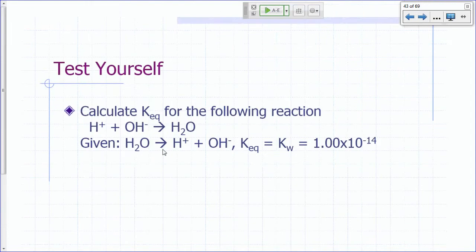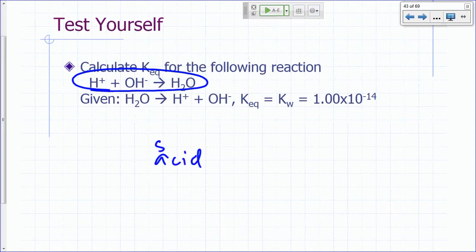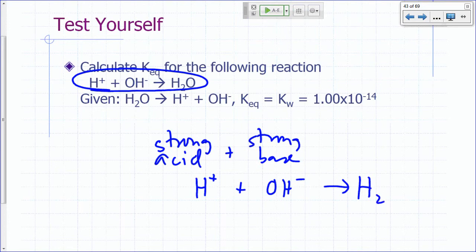So let's apply these to the following. Suppose you wanted to know the KEQ for this reaction. H plus plus hydroxide gives you water. Well, this is what you get if, for example, if you have a reaction between a strong acid and a strong base. If you remember, you have a strong acid and a strong base. The H plus from the strong acid plus the hydroxide from the strong base will give you water, right? That's the net ionic equation for it.